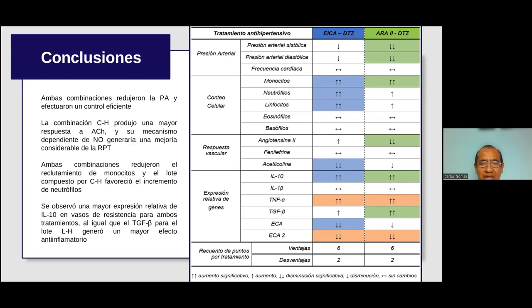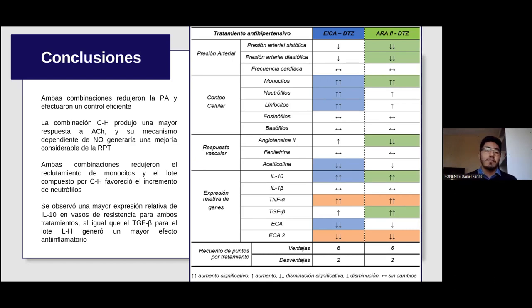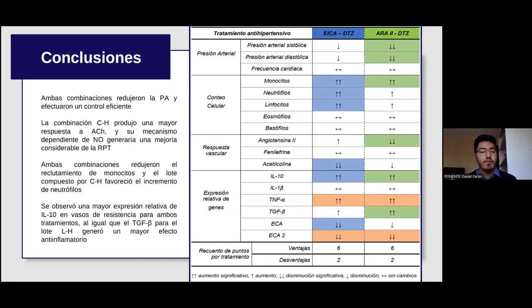¿Cuál es el efecto sobre el metabolismo de lípidos? En la patología de la hipertensión arterial se acumulan especies reactivas de oxígeno, lo que la hace una enfermedad autoinmune. Estas ROS son capaces de alterar lípidos mediante un proceso conocido como peroxidación lipídica, alterando los lípidos de membrana y generando moléculas ajenas al organismo. Por eso, en la hipertensión arterial se considera una enfermedad autoinmune, ya que células del sistema inmunológico eliminan estos lípidos modificados por ROS, lo que conlleva un proceso inflamatorio crónico.